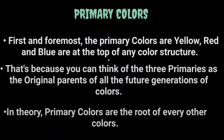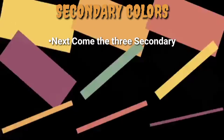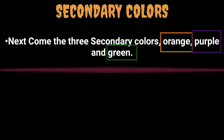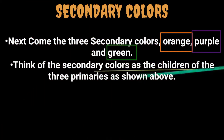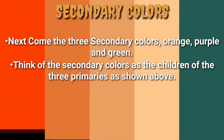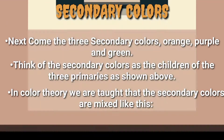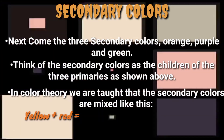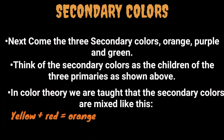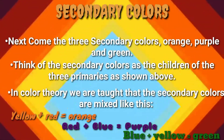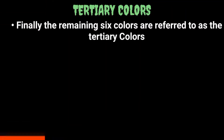Secondary colors: next come the three secondary colors — orange, purple, and green. Think of the secondary colors as the children of the three primaries, as shown above. In color theory, the secondary colors are mixed like this: yellow plus red gives orange, red plus blue gives purple, and blue plus yellow gives green.